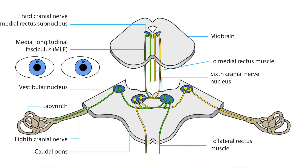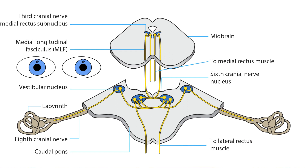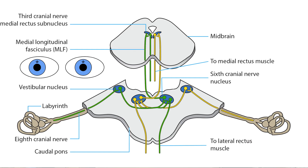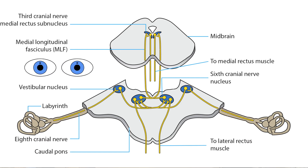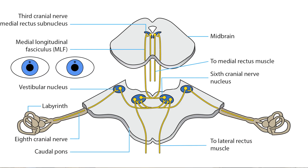By counteracting head or body movements, the vestibulo-ocular reflex keeps the eyes constant in space, allowing the foveas to remain fixed on a stationary target so you can see it distinctly. For example, if your head or body moves to the right, a vestibulo-ocular signal will move the eyes conjugately to the left, too fast for you to detect the shift.